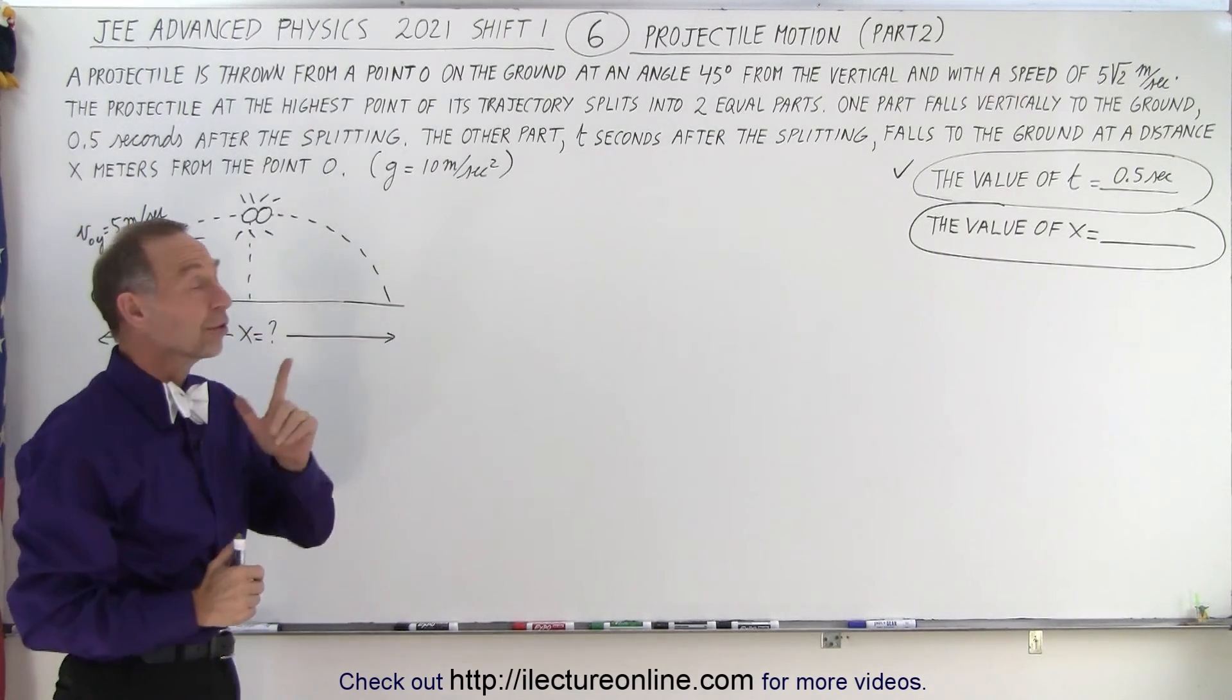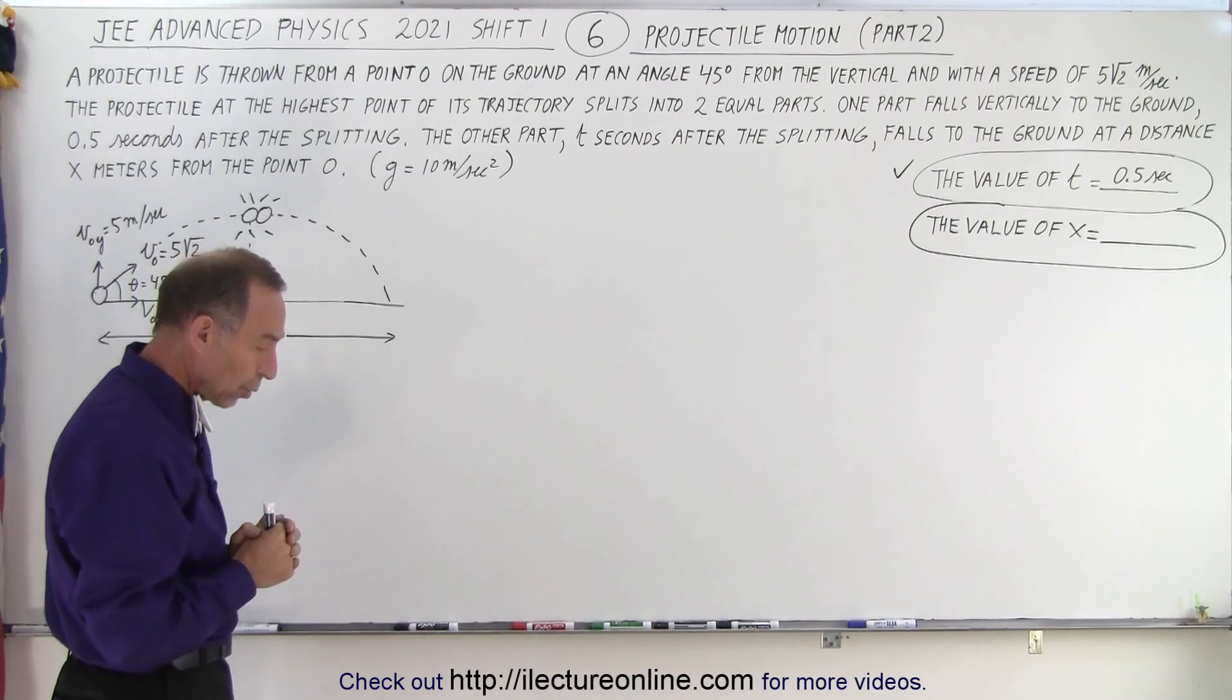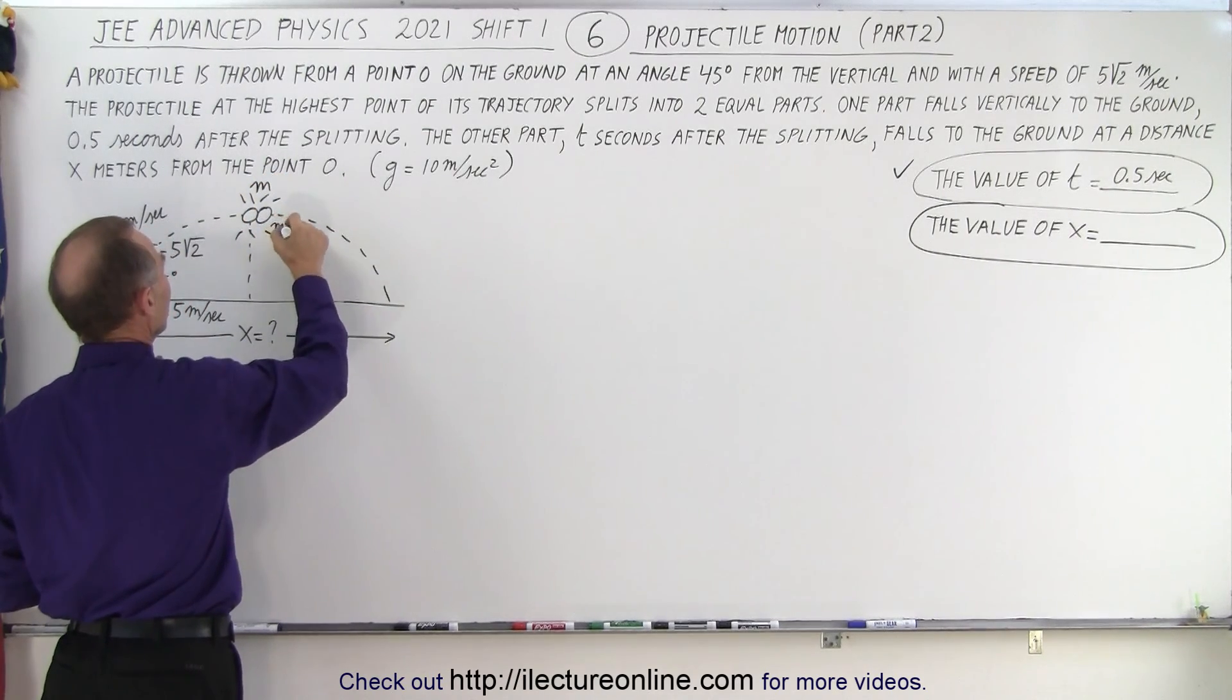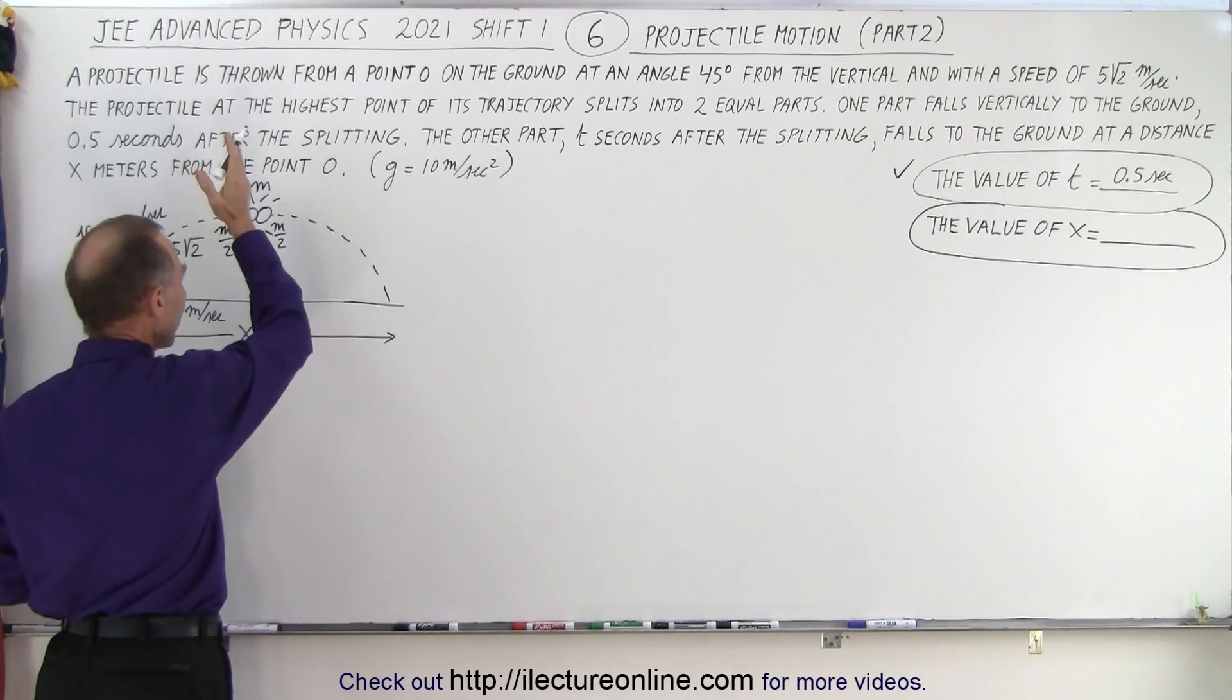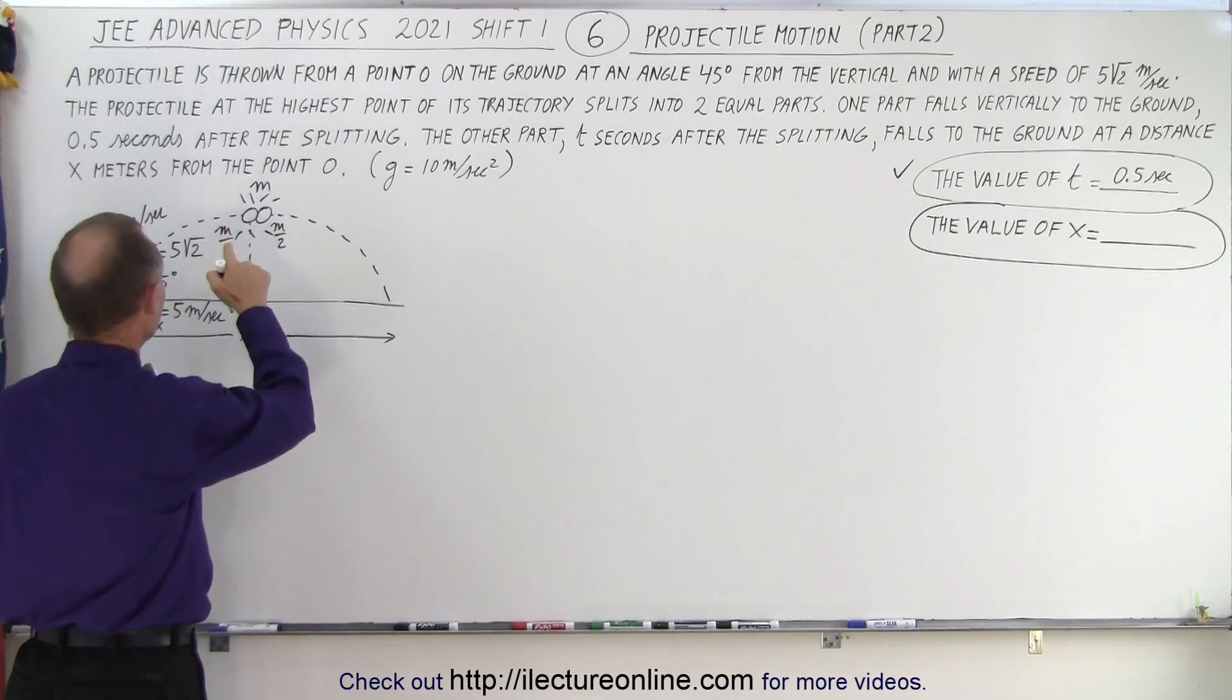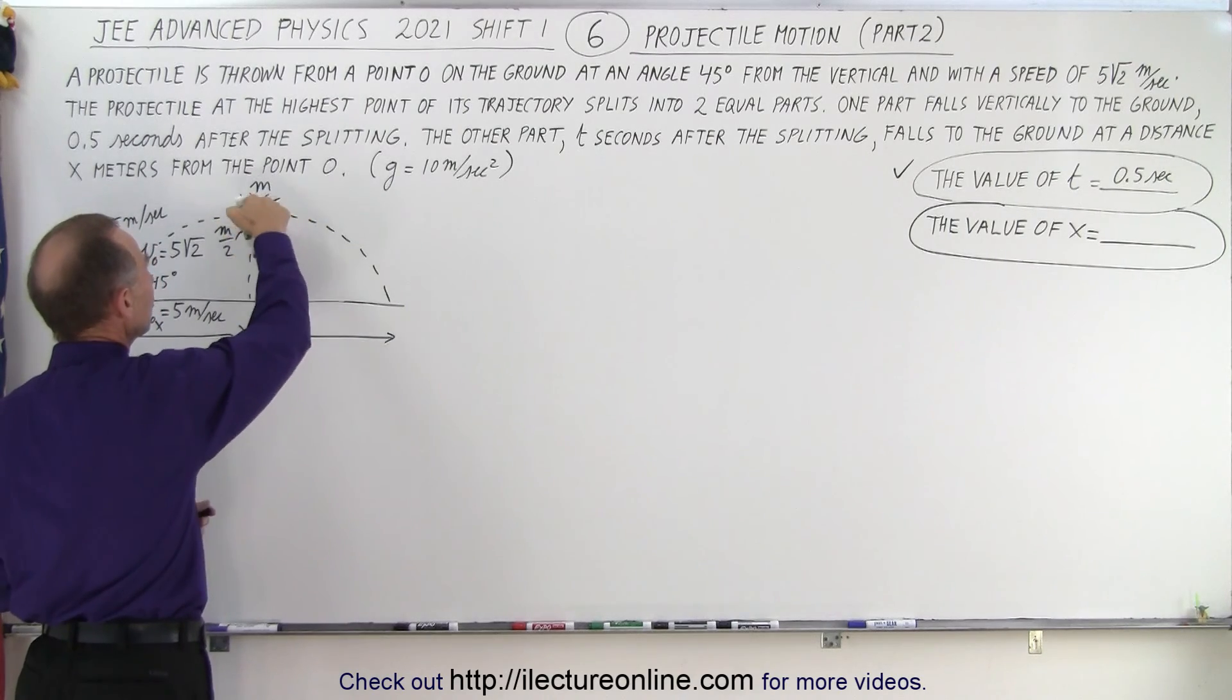And so now they want us to find that distance x. So something happens up here. We have a projectile that has mass m and then it splits into two parts where each part now has half the mass. One that falls vertically downward, the other one that keeps going. So we have a conservation of momentum.